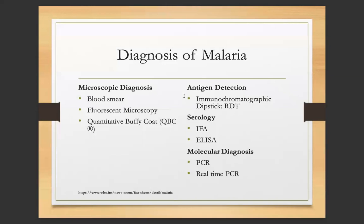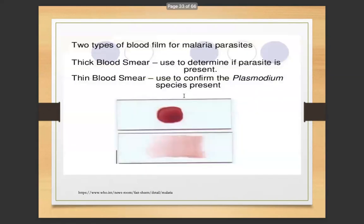Secondary prevention — diagnosis of malaria: Microscopic diagnosis includes blood smear, fluorescent microscopy, and quantitative buffy coat. Antigen detection includes the immunochromatographic dipstick (RDT). Serology includes immunochromatographic antibodies and ELISA. Molecular diagnosis includes PCR and real-time PCR. The two types of blood films for malaria parasites are the thick blood smear — used to determine if a parasite is present — and the thin blood smear — used to confirm the Plasmodium species present.